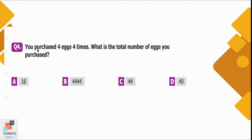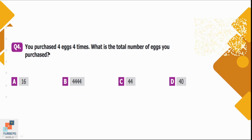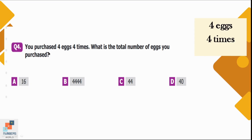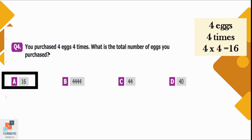Question number 4: You purchased 4 eggs 4 times. What is the total number of eggs you purchased? 4 times 4 is equal to 16, so we purchased 16 eggs in total. Option A is the correct option.